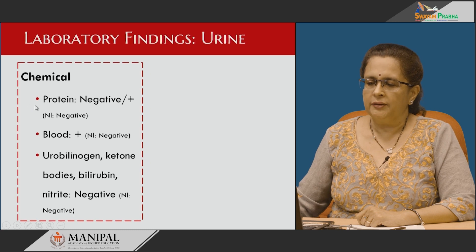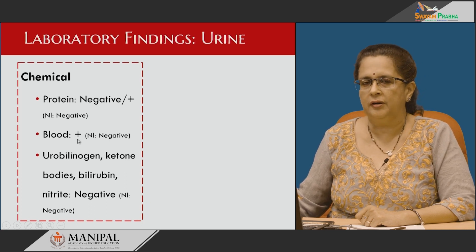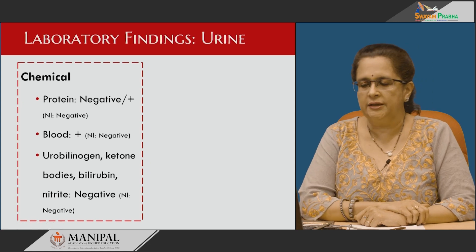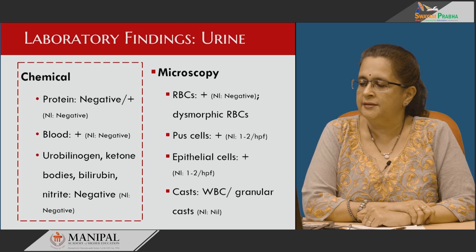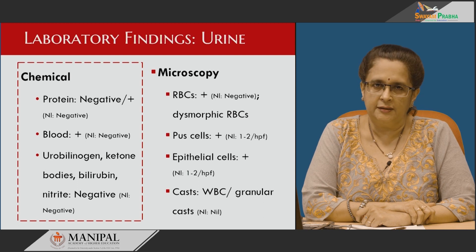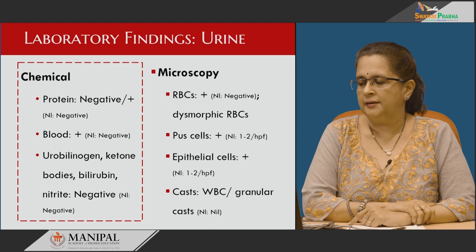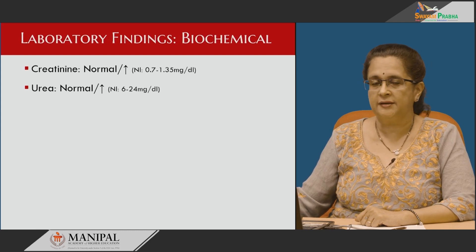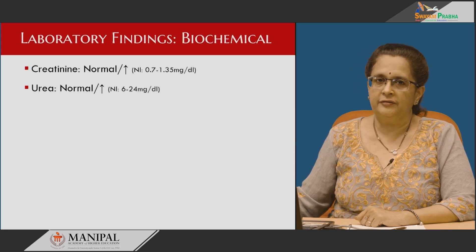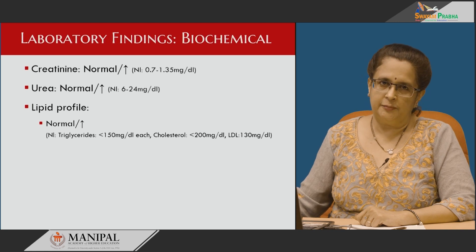In urine, protein is usually negative but can be present; blood is most often present — either micro or macrohematuria. Urobilinogen, ketone bodies, bilirubin, and nitrite are not seen. Under the microscope, dysmorphic RBCs are more often seen because it is a glomerulonephritis case. Pus cells and epithelial cells may be present; casts include WBC casts or granular casts. Creatinine and urea levels are usually normal but may be elevated depending on progression. Lipid profile is normal unless the patient progresses to nephrotic syndrome. C3 levels are normal but can sometimes be reduced, which indicates progression to more severe renal disease. C4 elevation is also associated with progression to severe renal disease. Proteins are usually normal but may be reduced, with albumin and globulin reduced accordingly.